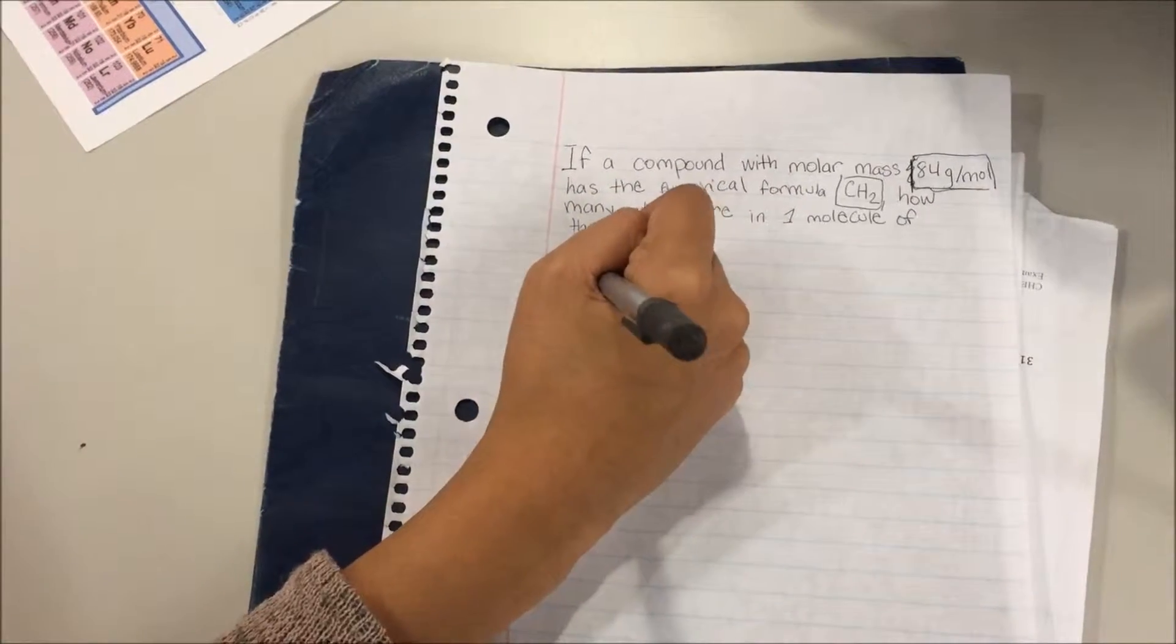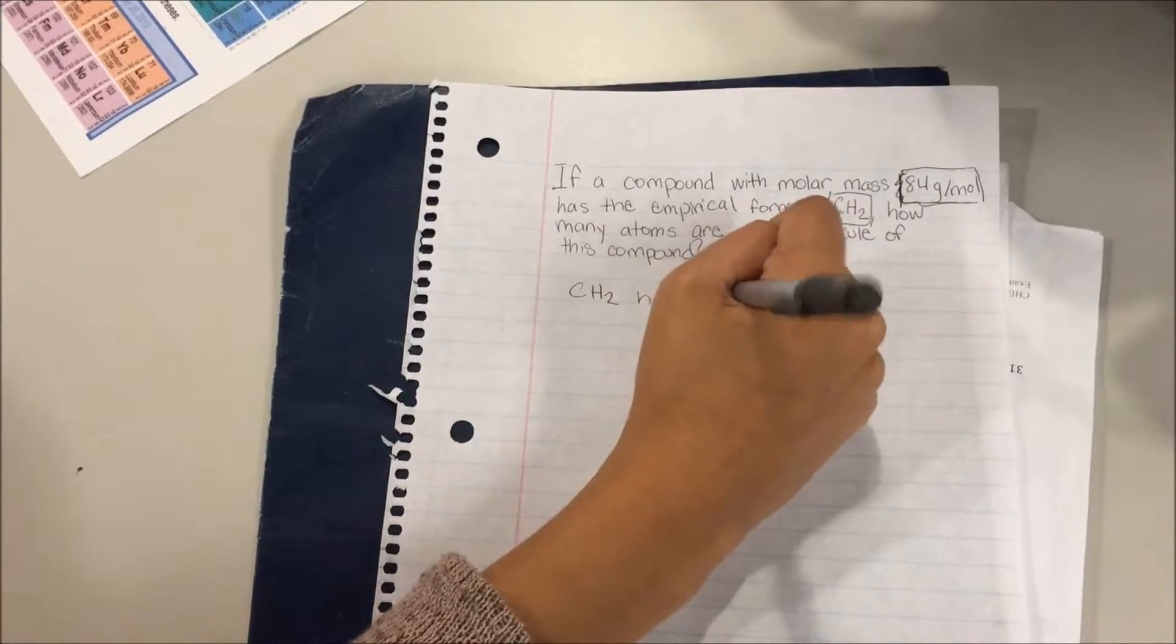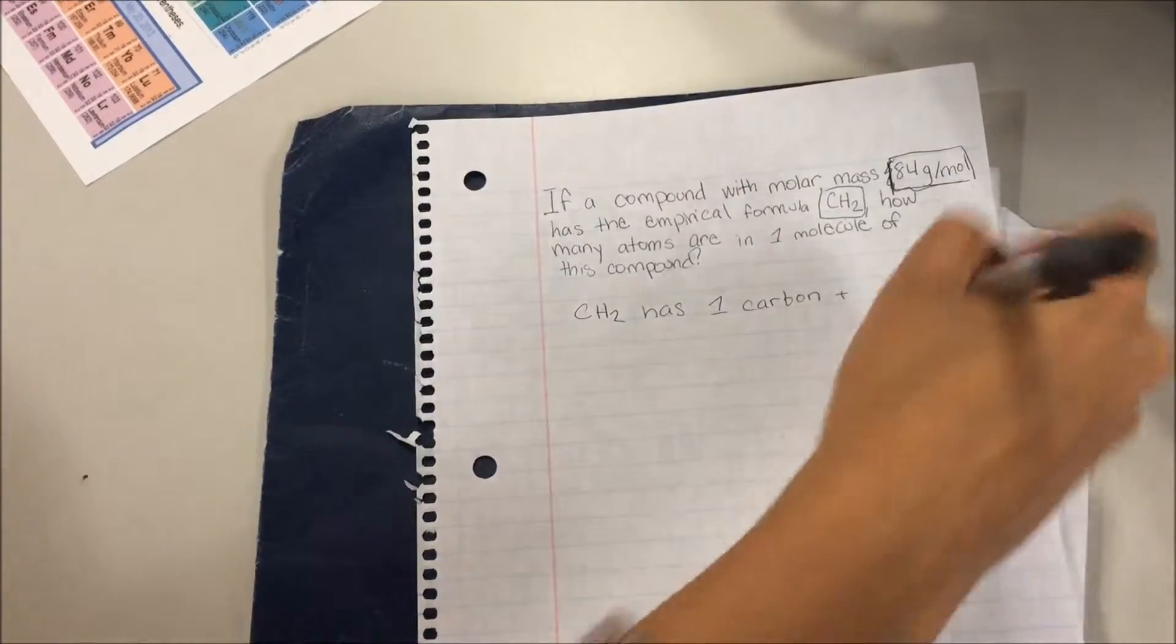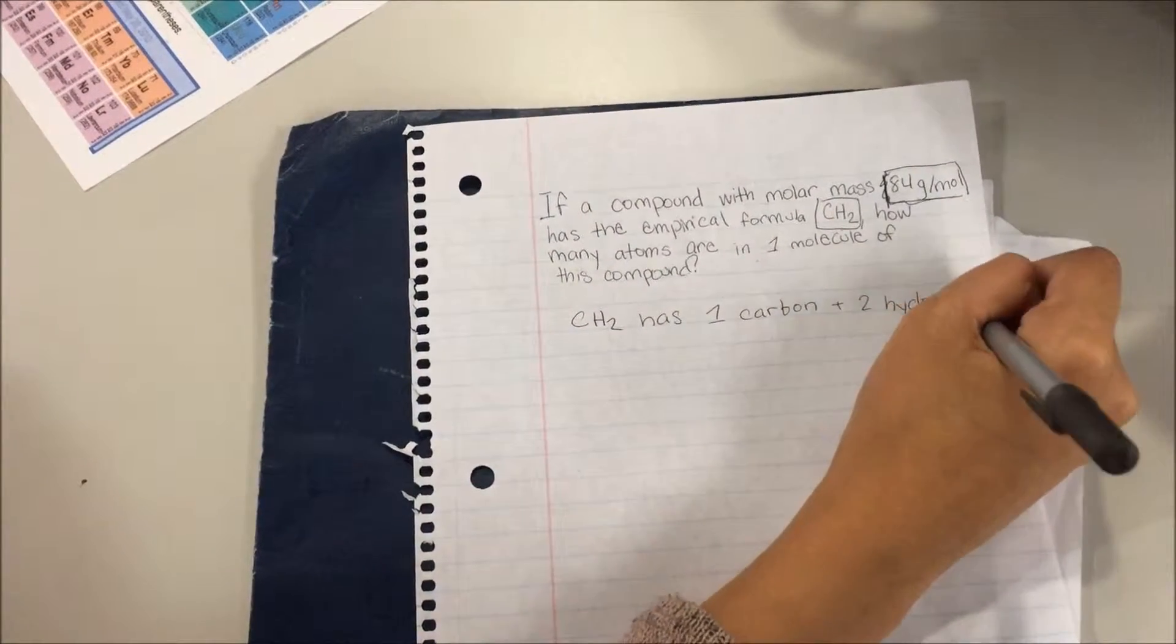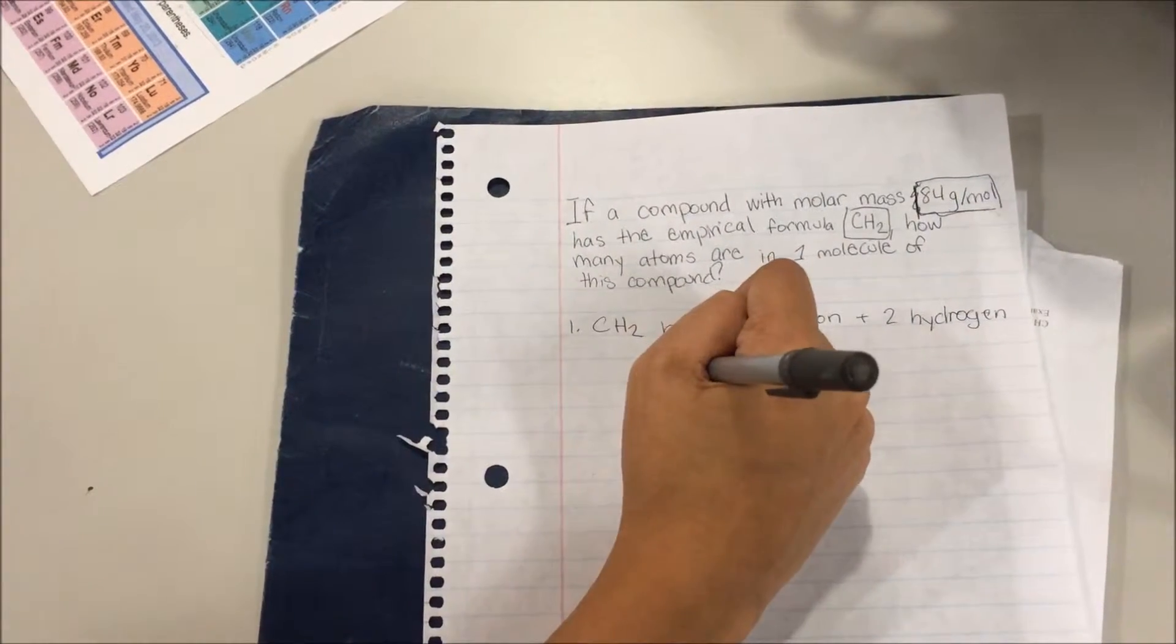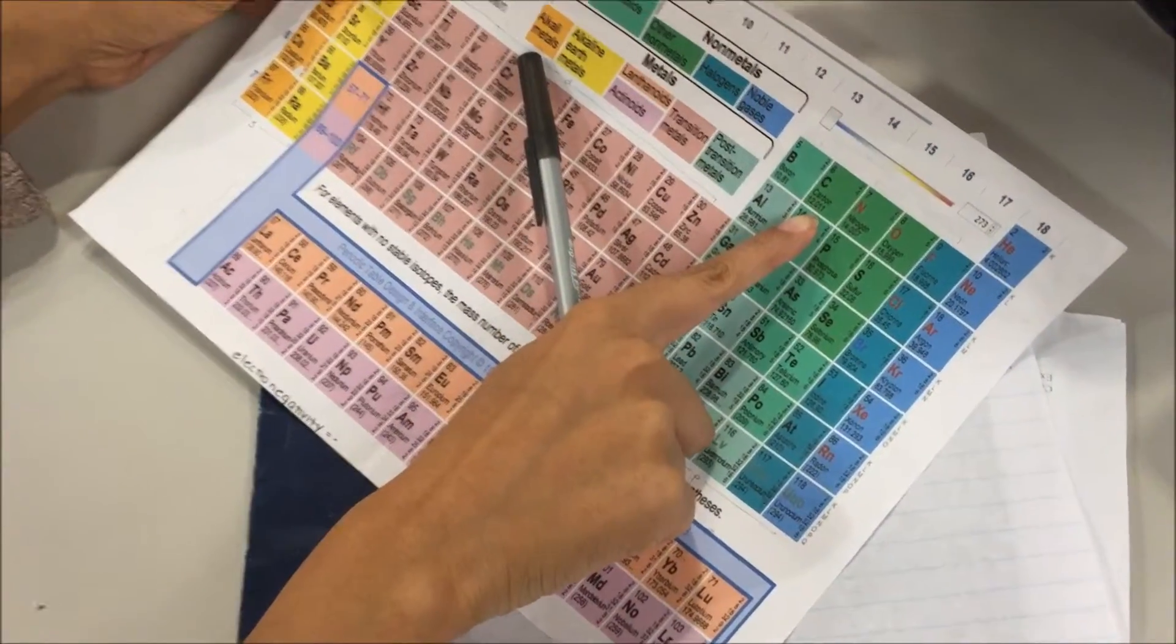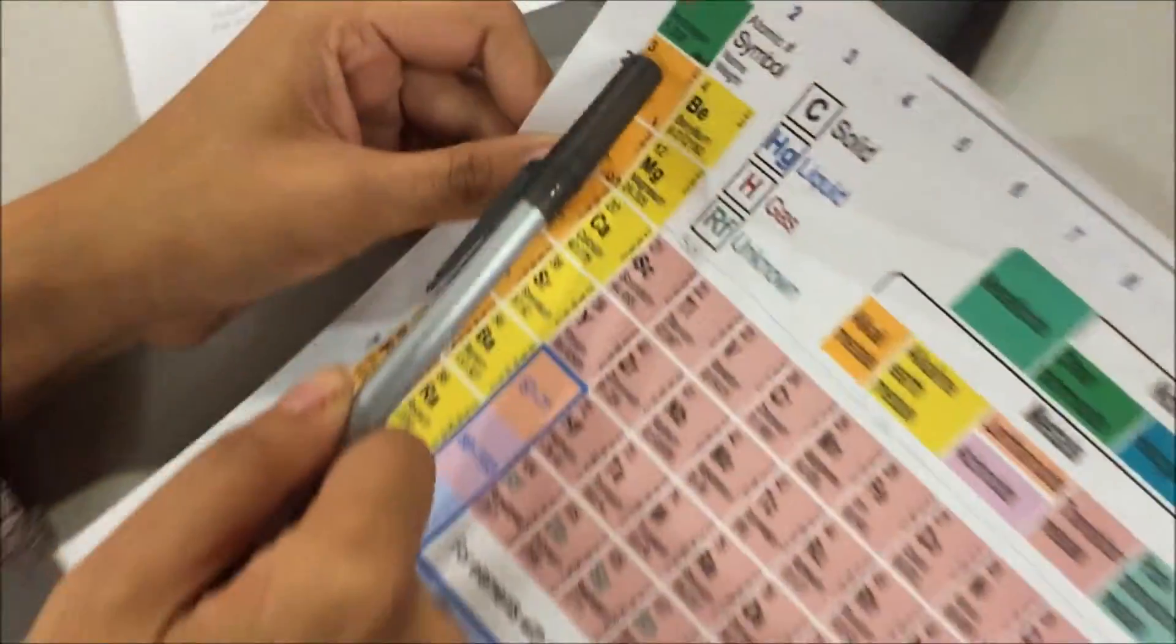CH2 has 1 carbon plus 2 hydrogen. We need to know the molecular weight. Carbon's molecular weight is 12 grams, and hydrogen's is 1 gram.